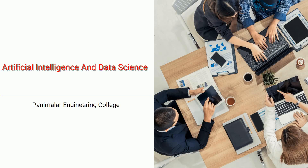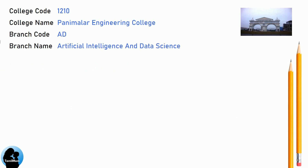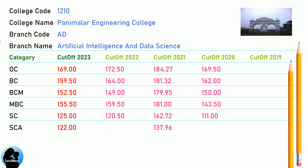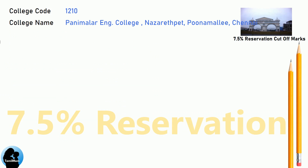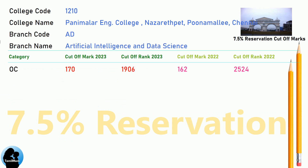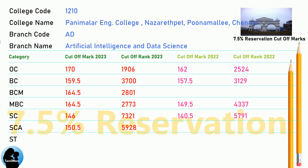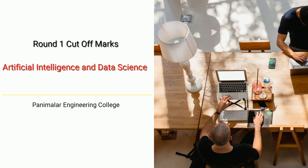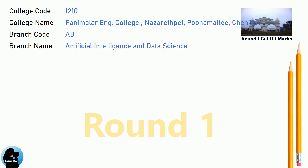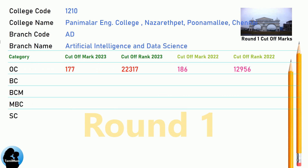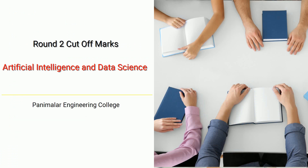DNA Cut-off for Panimalar Engineering College in Artificial Intelligence and Data Science. DNA 7.5 Reservation Cut-off for Panimalar Engineering College in Artificial Intelligence and Data Science. DNA Round 1 Cut-off for Panimalar Engineering College in Artificial Intelligence and Data Science. DNA Round 2 Cut-off for Panimalar Engineering College in Artificial Intelligence and Data Science.